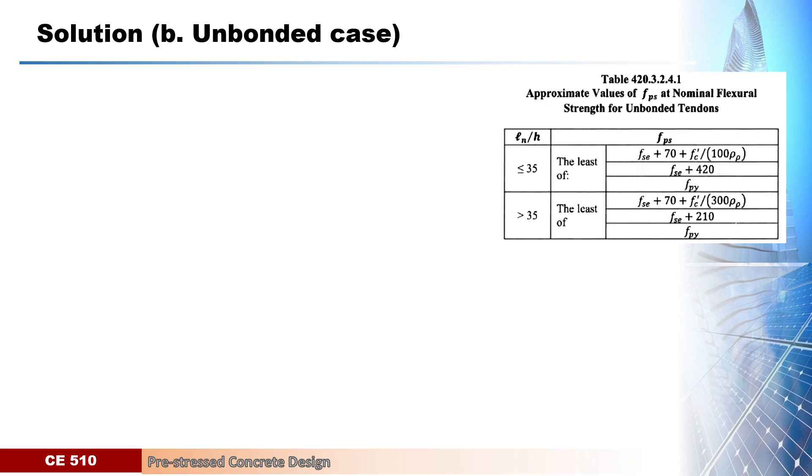If the span to depth ratio is less than or equal to 35 or greater than 35, we will start determining the span to depth ratio. Knowing that the span is 20 meters and the depth of the beam is 1 meter, we calculate the ratio as 20 over 1 equals 20, which is less than 35.